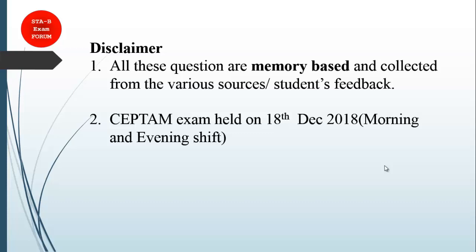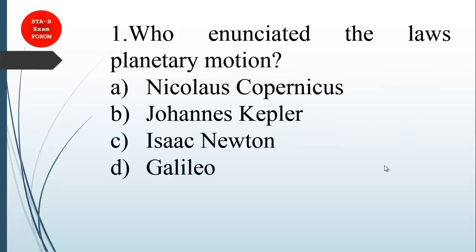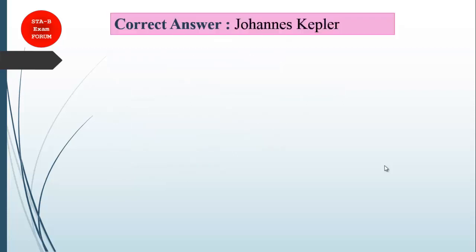The first question was: who enunciated the laws of planetary motion? Nicolaus Copernicus told us that Earth revolves around the Sun, so he is not the one. Kepler is the correct one because he gave the three planetary laws of motion. Isaac Newton gave the laws of motion, whereas Galileo discovered satellites of Jupiter and invented the telescope. The correct answer is Johannes Kepler.